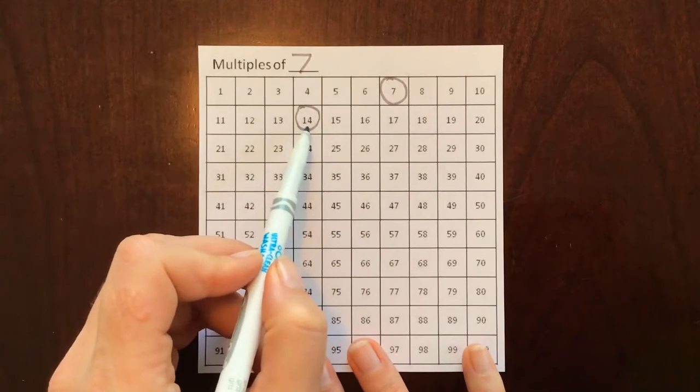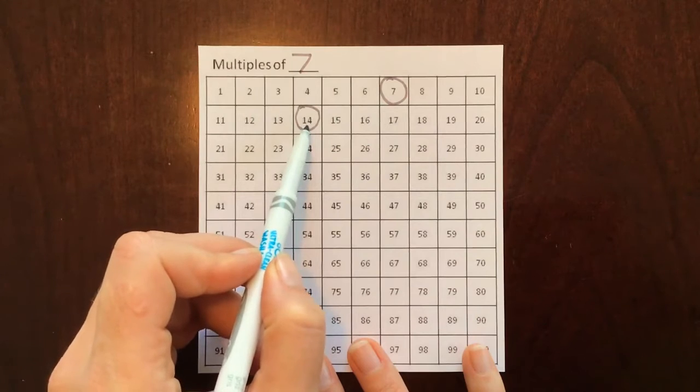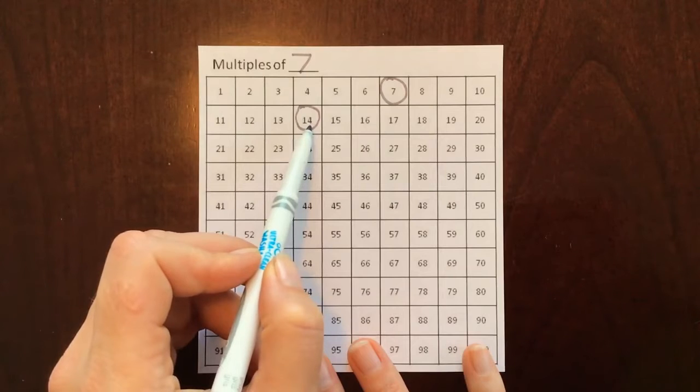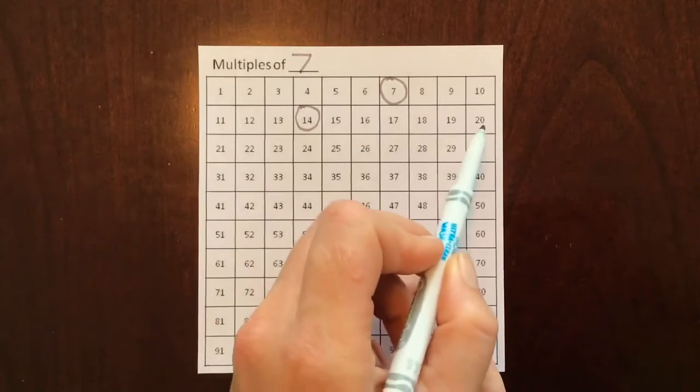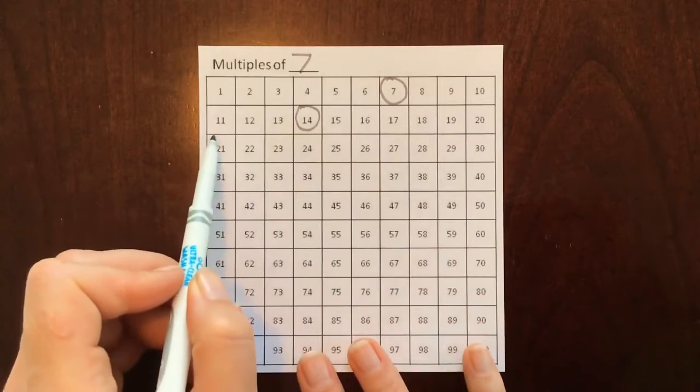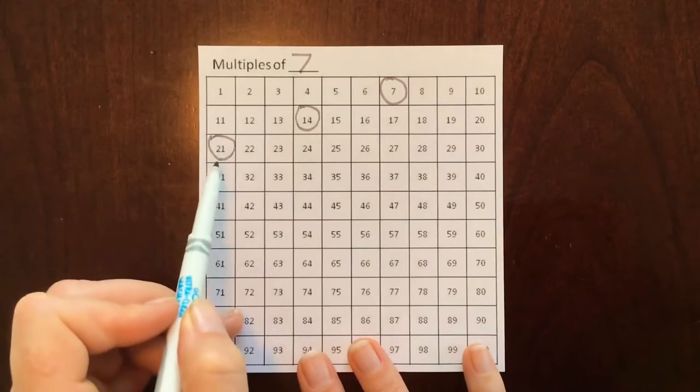Okay, I'm gonna stay here and I want you to count the next multiple of seven. Go. All right, let's see where you landed. One, two, three, four, five, six, seven. Did you land on 21? Nice.